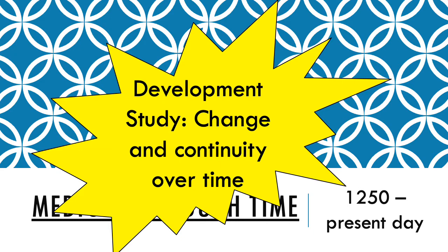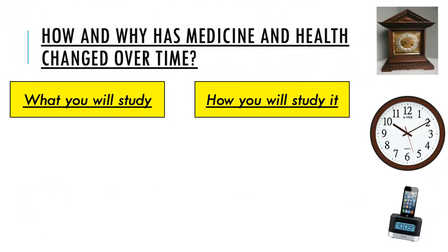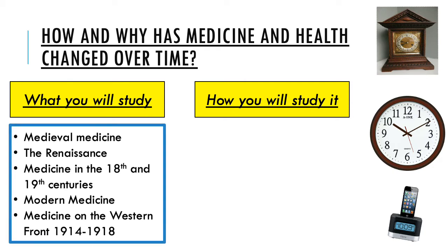The skill we're looking at here is your historical skill of understanding change and continuity — what has changed in medicine and health across this time period, and equally what has stayed the same. Within that we will look at why things have changed or stayed the same, and the pace and extent to which things have changed. This is a large chunk of time, so you do need a way of breaking it down.